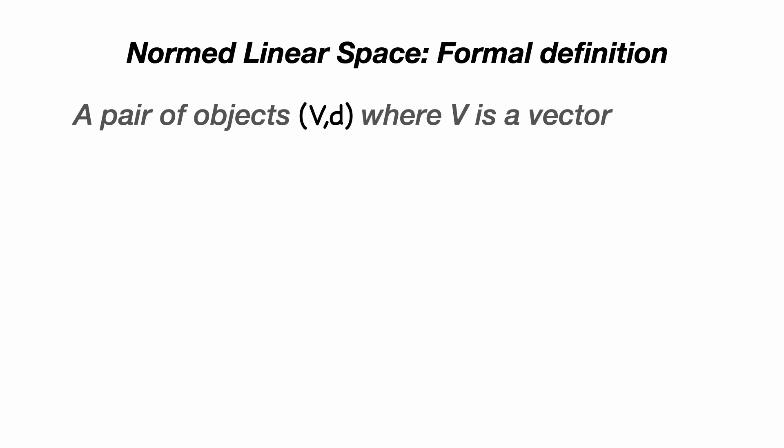To recap, we're operating in this space we call a normed linear space. This is a vector space along with something called a norm, which essentially measures the length of a vector.